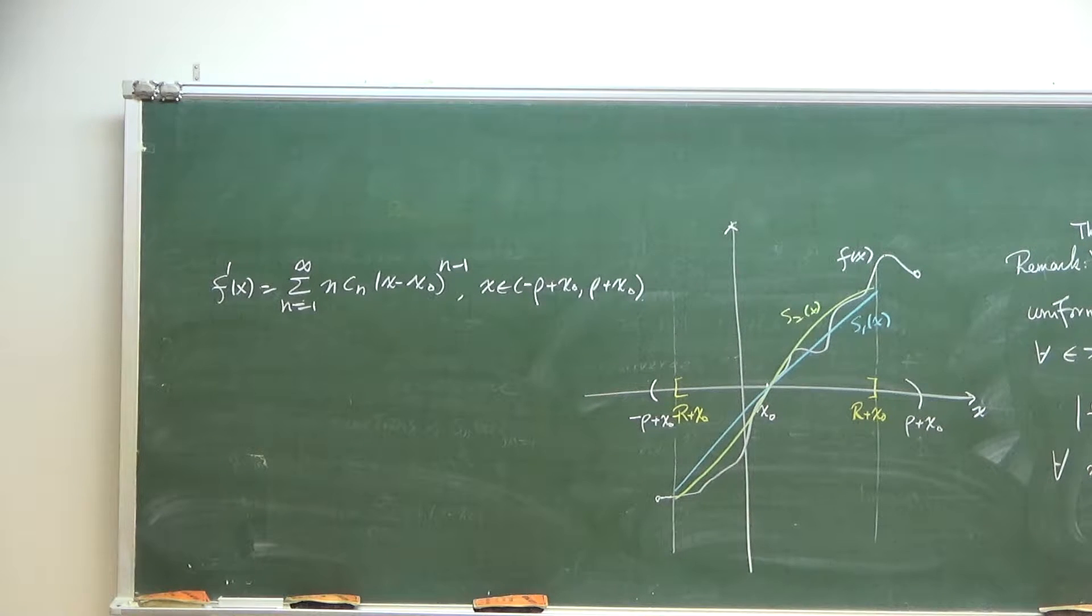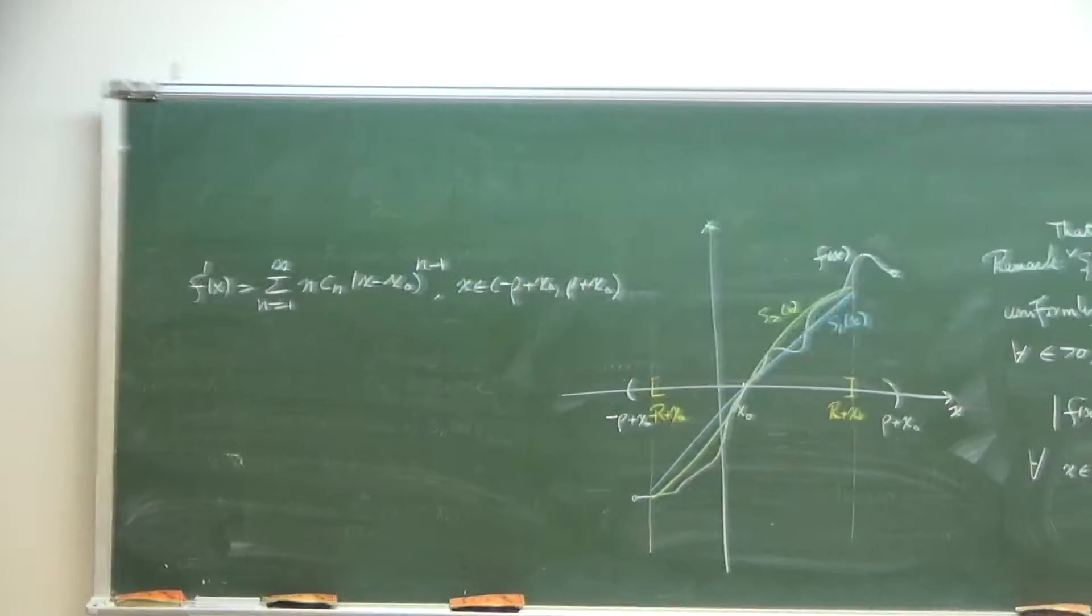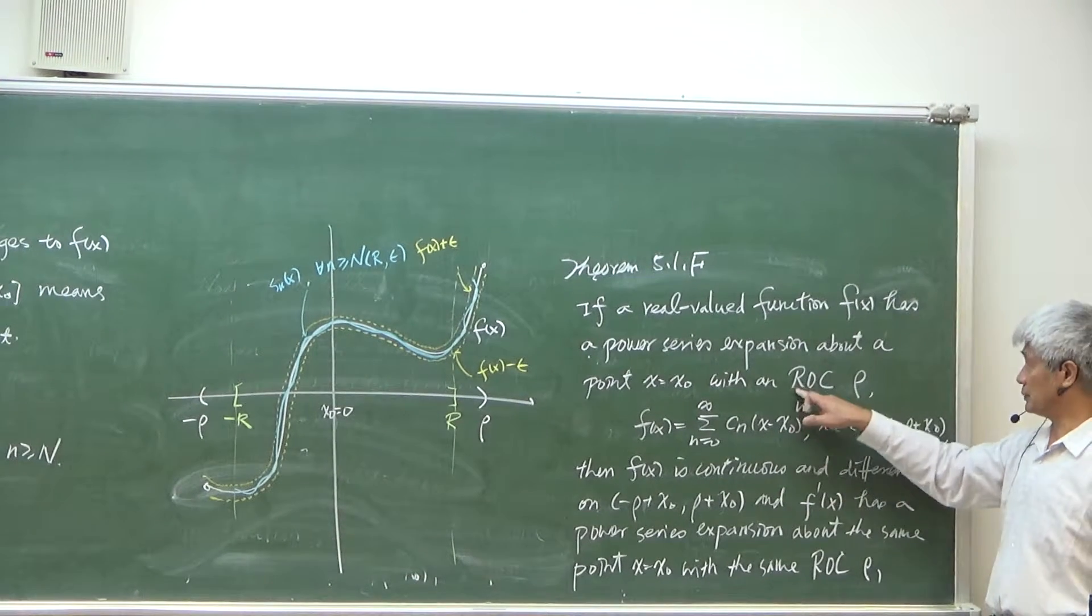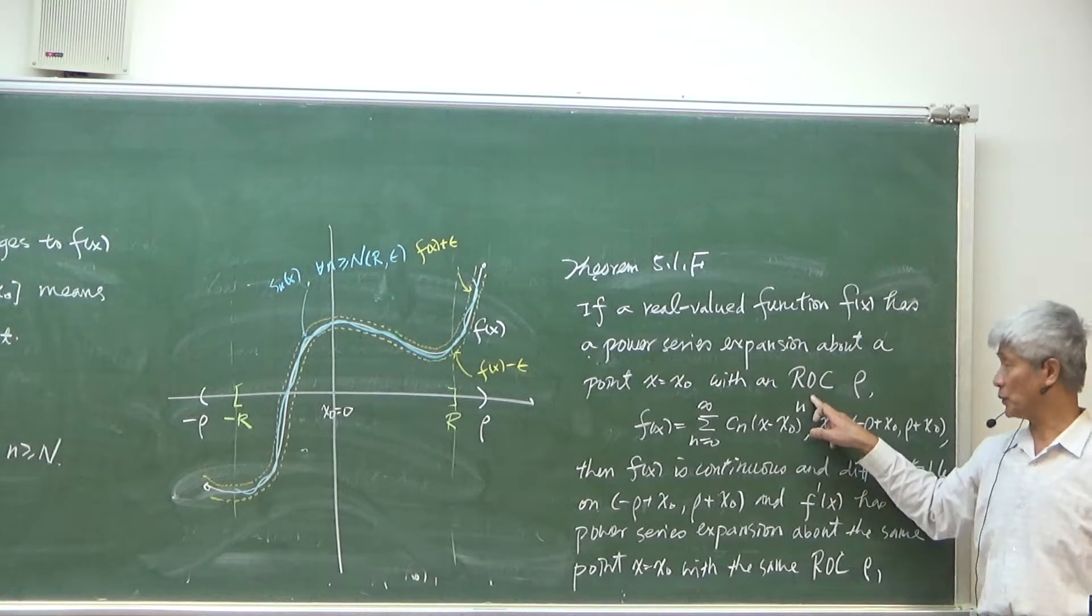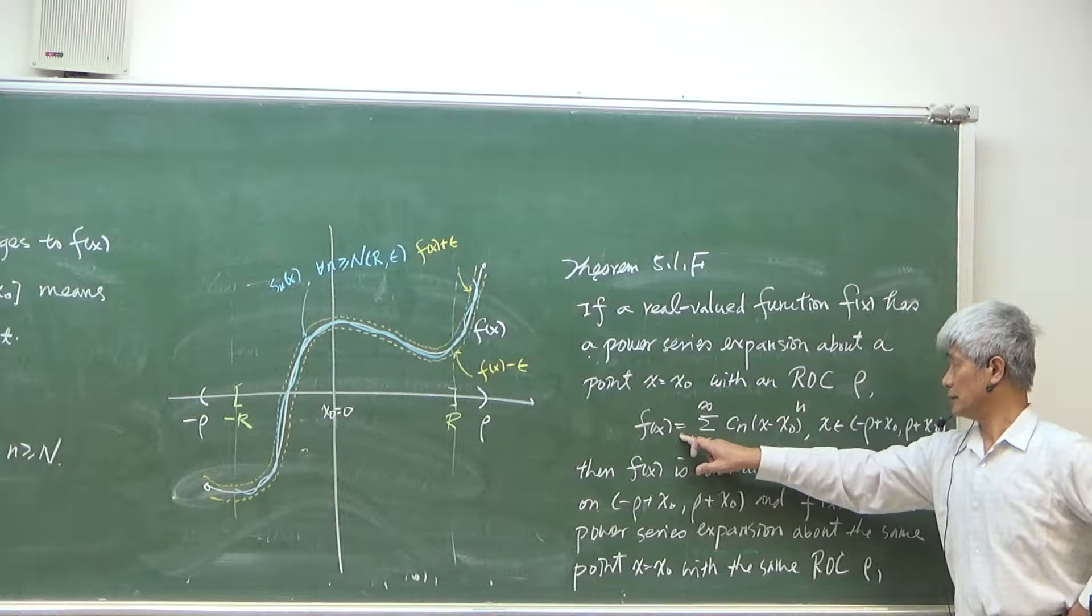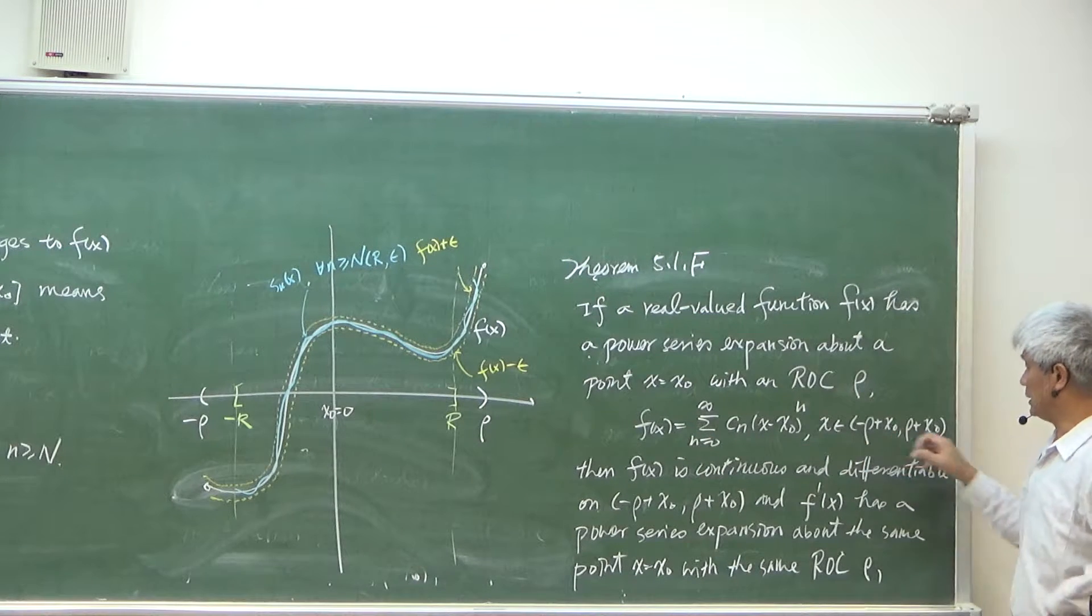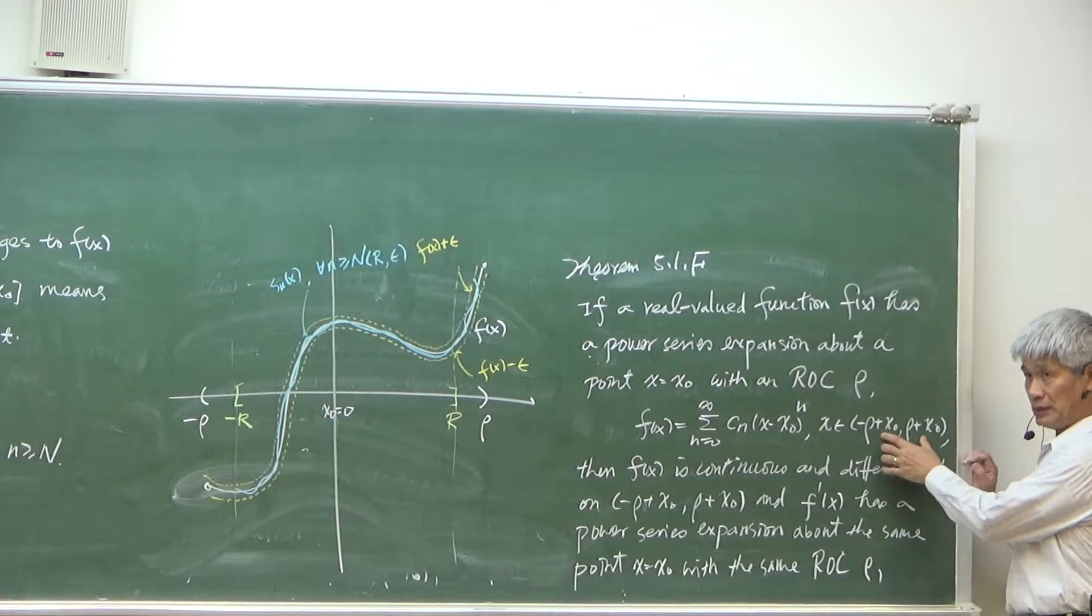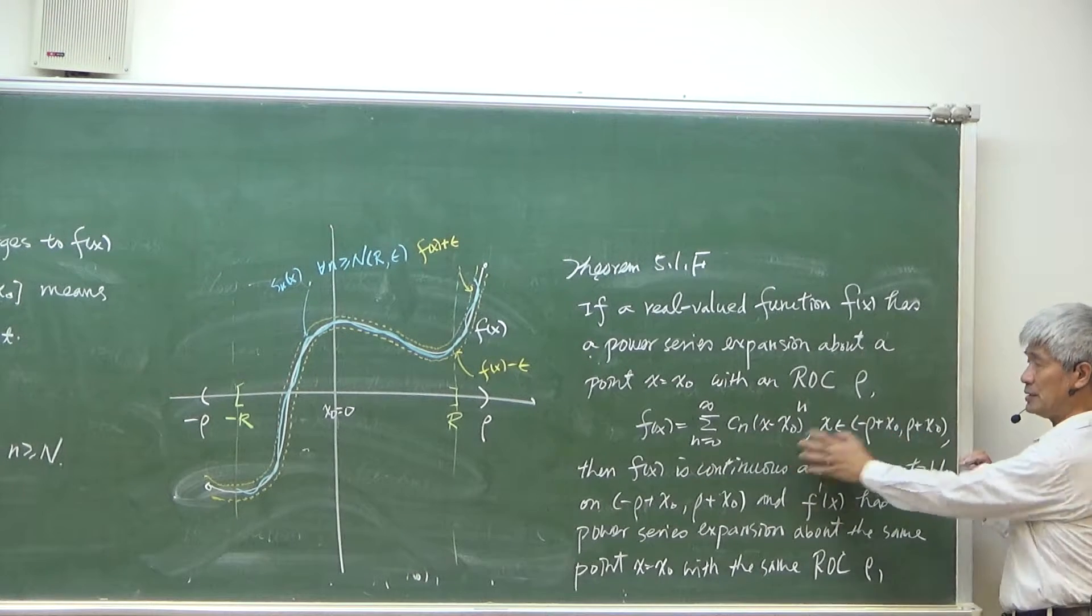It is a very interesting theorem because they say that if we can expand a real valued function by a power series like this one, and we know any power series has a radius of convergence, so we know this equality to hold on every x in this interval. When this is true,